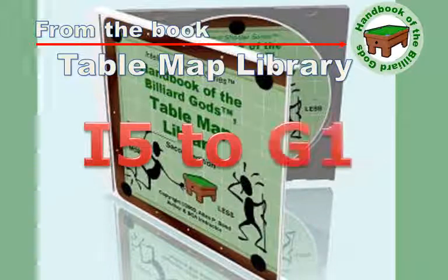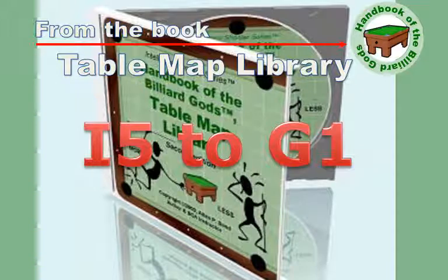This video shows the path that the cue ball will travel around the table, from the I5 position to the G1 diamond target on the rail.